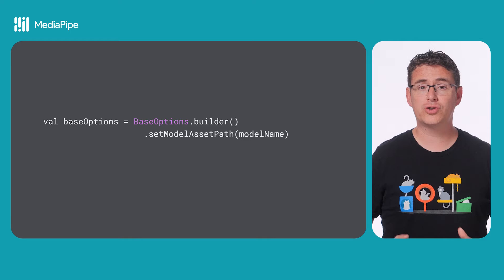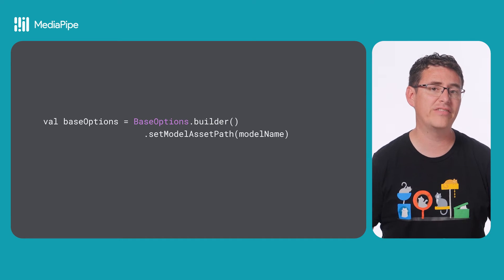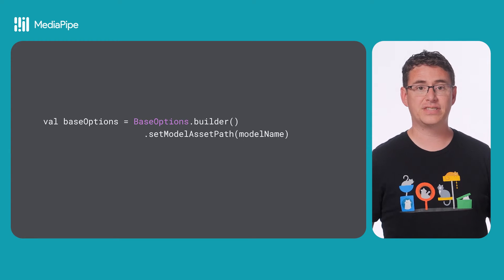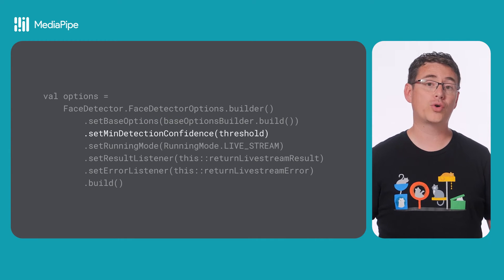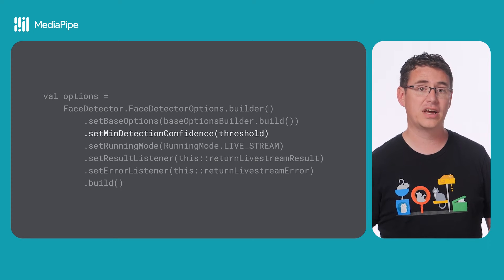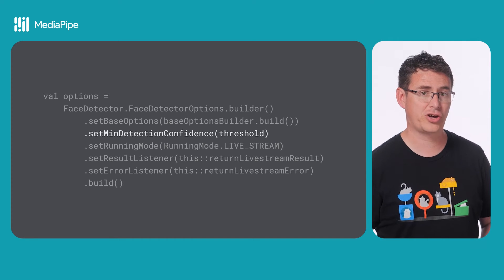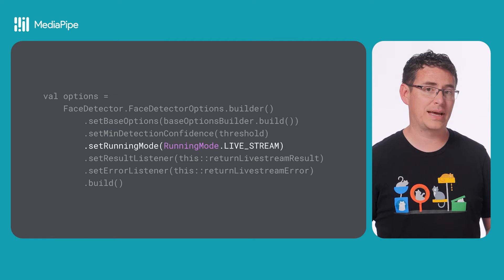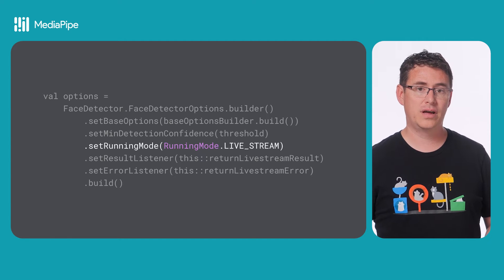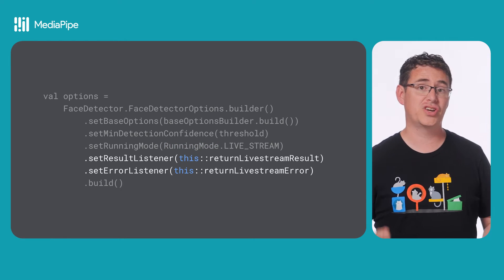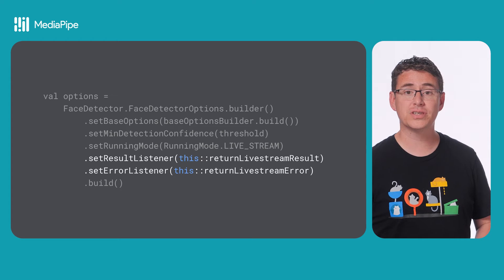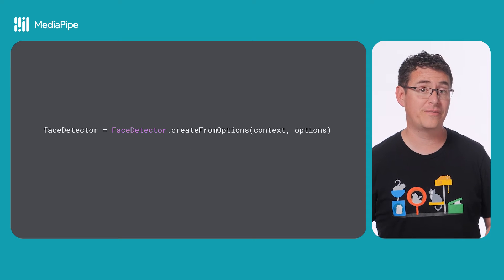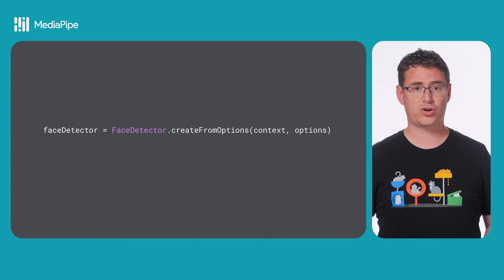From there, you will need to create the face detector object that will do all of the heavy lifting for the machine learning feature. You can start by making a new base options object that sets the path to your model, then create a task-specific options configuration object that sets a required minimum detection confidence that must be met to return a result, as well as a running mode. In this example, you will detect against a live camera stream. And since we're using a live camera stream, which runs detection asynchronously, you will also need to associate a set of result and error listeners with the detector. Once you have all the configuration done, you can create your new face detector object.